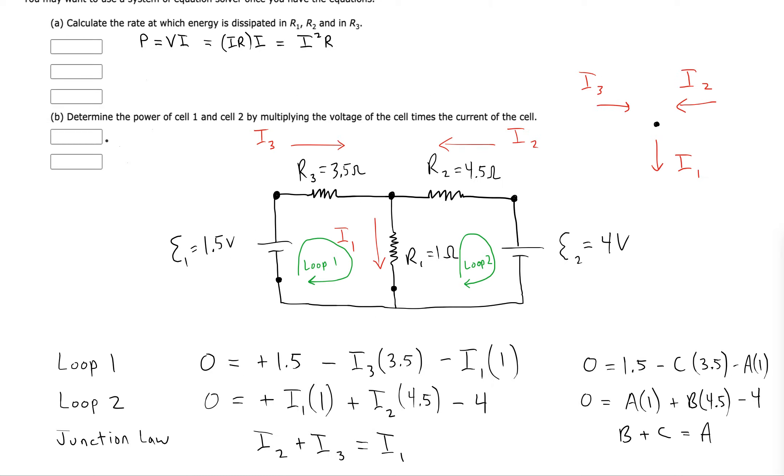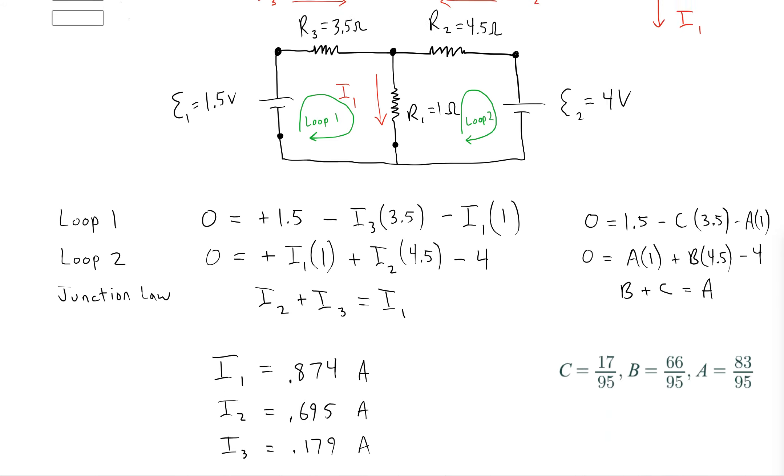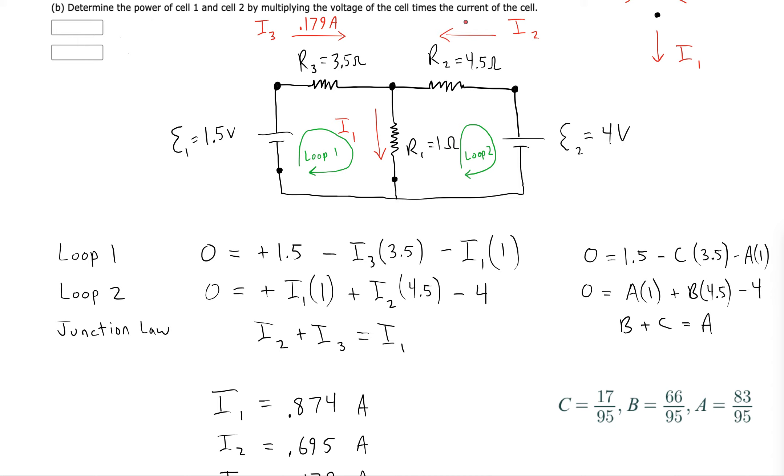When we're getting the power of the cells, we've got to multiply the voltage times the current in that cell. So we said this was 0.179 amps here, and then I2 was 0.695 amps. So it's going to be the same currents through the batteries.